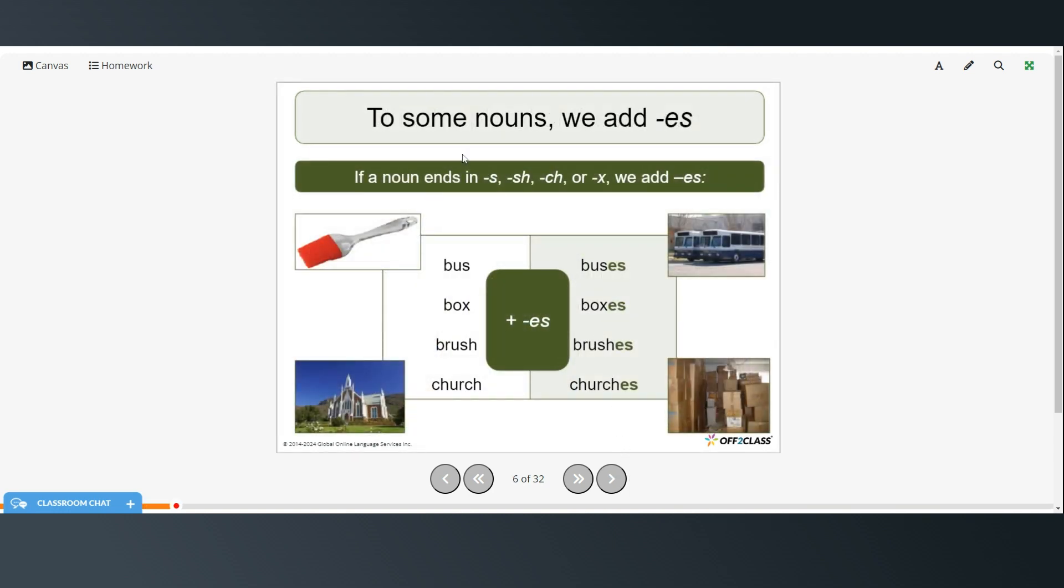Alright, and then there's some other rules. For some nouns we have to add an ES. So if a noun ends in S, SH, CH, or X, we have to add an ES. So bus, because it ends in an S, we add an ES to make the plural and it's pronounced buses. Boxes. Box ends in an X, so we add an ES to make the plural and it becomes boxes. Brush, this is an example of an SH noun. So to make it plural we add the ES and it becomes brushes. And church ends in CH, so we add the ES to make it plural and it becomes churches.